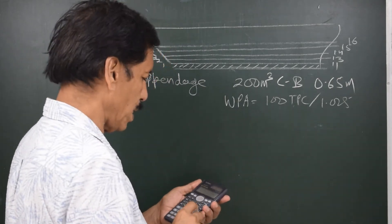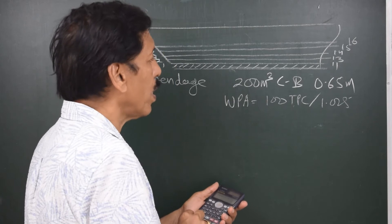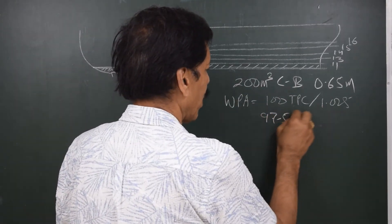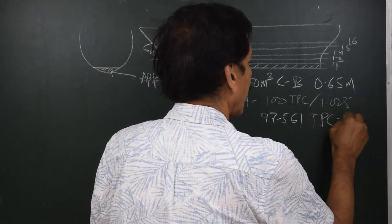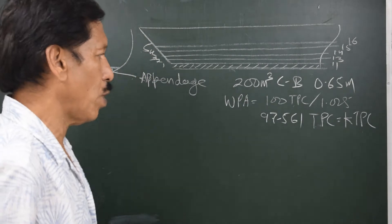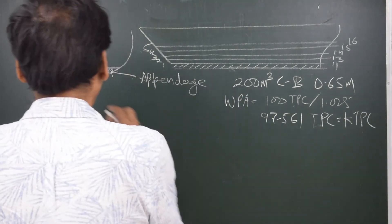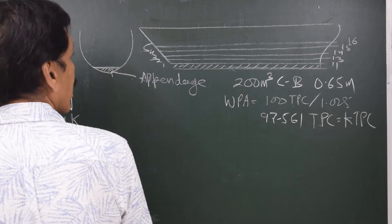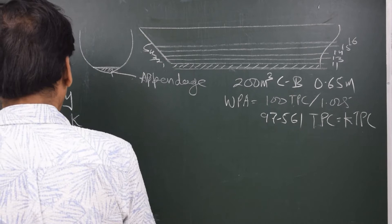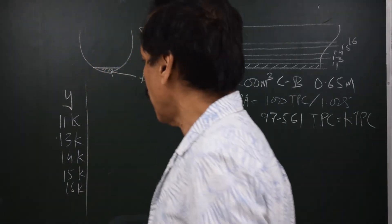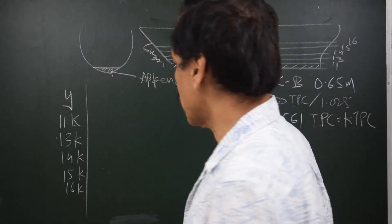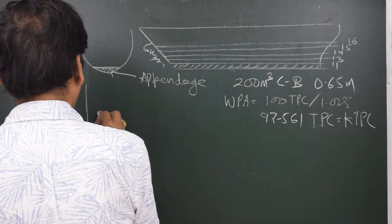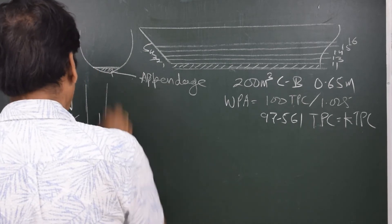100 divided by 1.025 gives 97.561. So the water plane area equals K times TPC, where K is a constant equal to 97.561. When I write the ordinates, they become 11K, 13K, 14K, 15K, and 16K — where 11K is the water plane area in square meters, not just the TPC. Since we have drafts at 1, 2, 3, 4, 5 meters, the number of segments is 4, so I can use the 1-4-2-4-1 Simpson's rule.